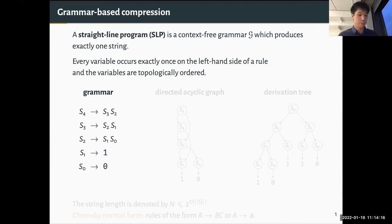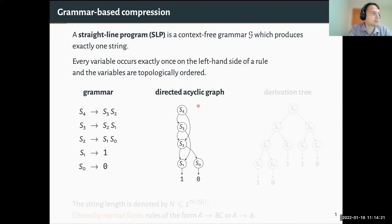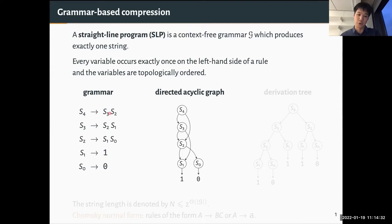In this talk I will often view the grammar as a graph — a DAG. The node sets of this DAG are the variables Si and the terminal symbols, here 0 and 1. The rules are reflected in the edges, so for example the rule S4 → S3 S2 is translated into an edge from S4 to S3 and from S4 to S2.